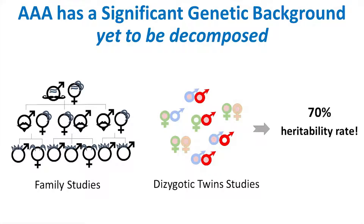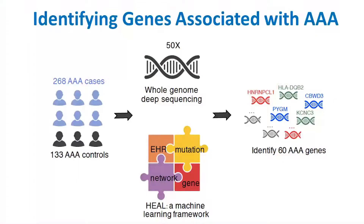We use a genome sequencing and machine learning approach to find genes involved in AAA and get at the underlying genetic cause of this disease. We sequenced the genomes of 268 cases along with 133 controls, and then let computer algorithms and machine learning find which genes are overly mutated in cases relative to the controls.